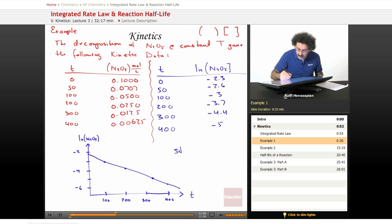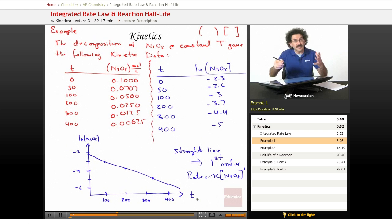Because this kinetic data gives you a straight line, that implies that you have a first order reaction. That means your rate law is K times the N2O5 to the first power. And that means your integrated rate law is: the logarithm of the concentration of N2O5 equals minus K times T plus the logarithm of the initial concentration of N2O5. So that's what's happening here. The initial concentration was 0.100. So we identified that it's first order. We can write a differential rate law for it, we can write an integrated rate law for it.